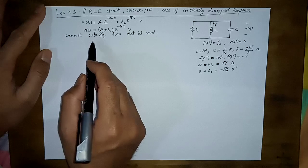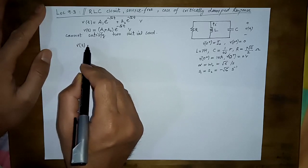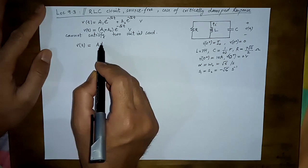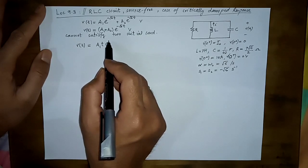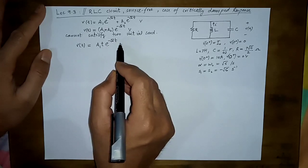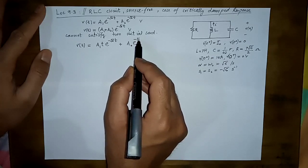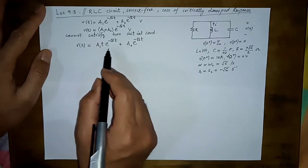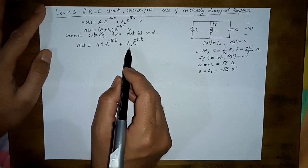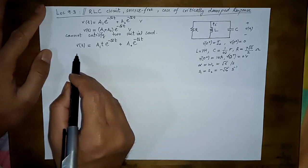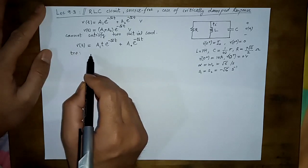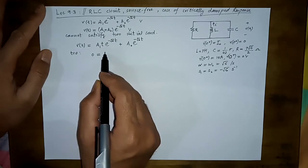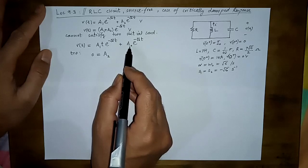Instead, we need two terms of different form. From mathematics, a factor of t is introduced into one term, making it time-dependent, while the other term retains its previous form. So now we have two distinct terms. Both A1 and A2 are to be found. If we put t = 0 in this expression, the voltage at zero equals zero; the t·e^(st) term vanishes, and we directly find that A2 = 0.